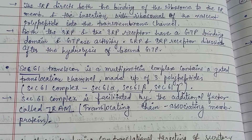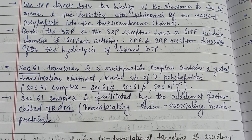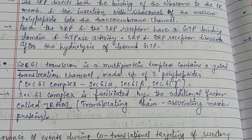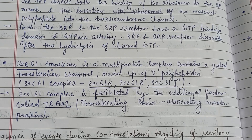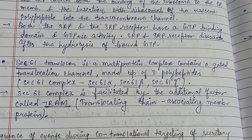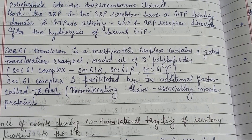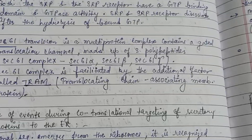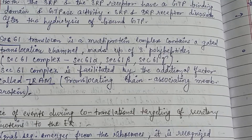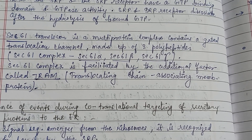There is also another key term: SEC61, which is a translocon present in the ER membrane. It is made up of three polypeptides — SEC61 alpha, SEC61 beta, and SEC61 gamma.